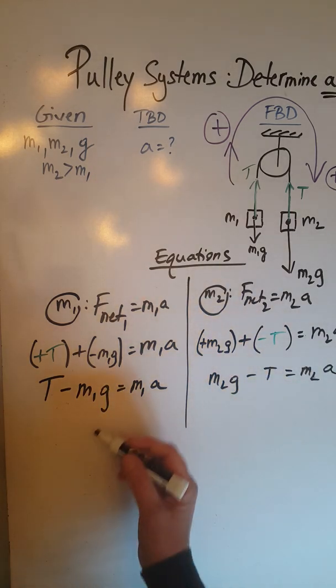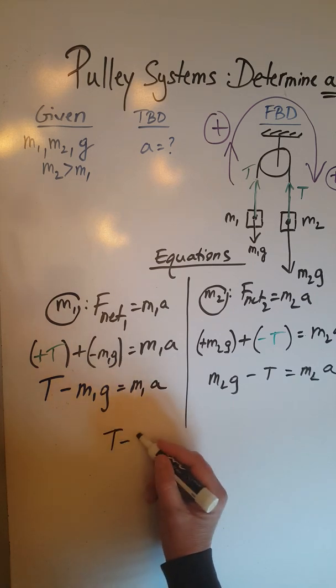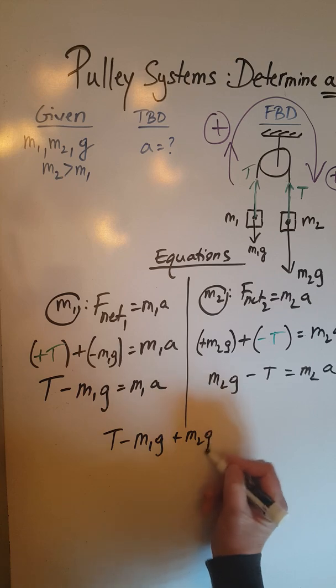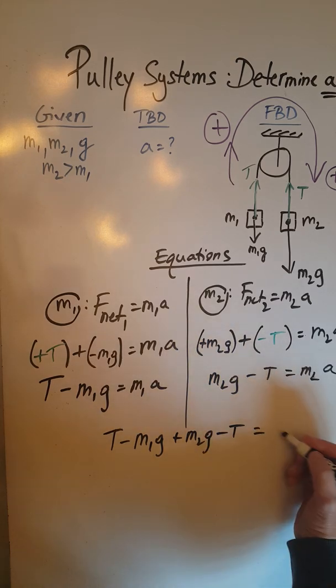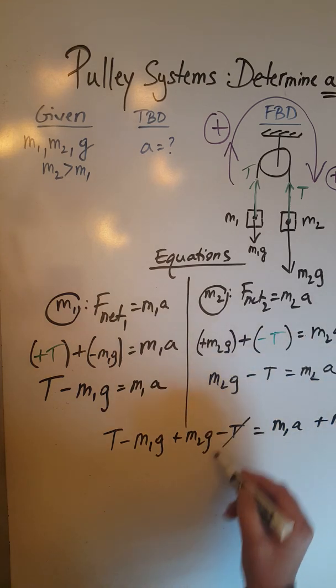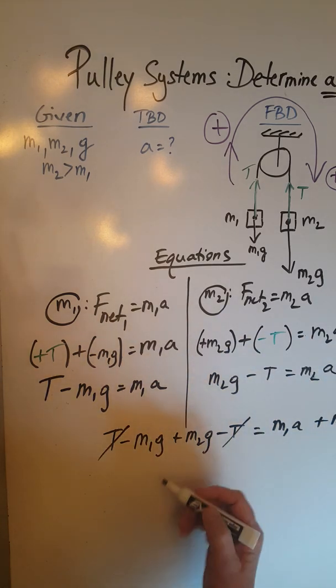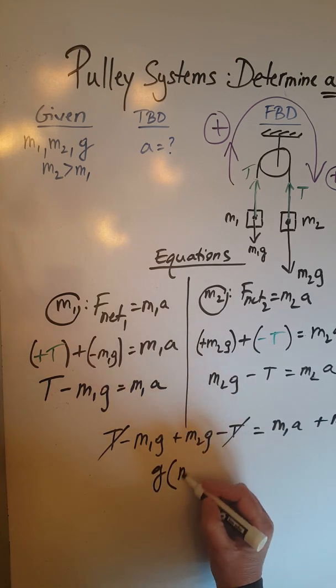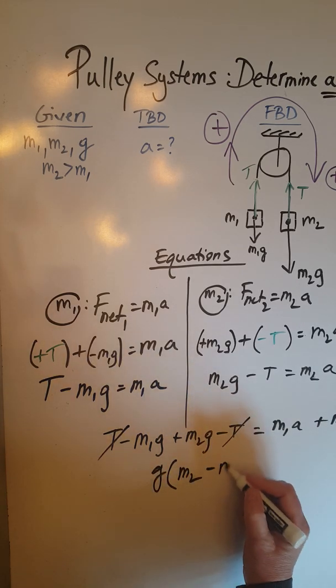So by adding the two equations we are going to have T minus M1G plus M2G minus T equals M1A plus M2A. It is obvious that T and minus T cancel out. On this side I'm going to factor out the G. I'm going to be left with the positive M2 and the negative M1.